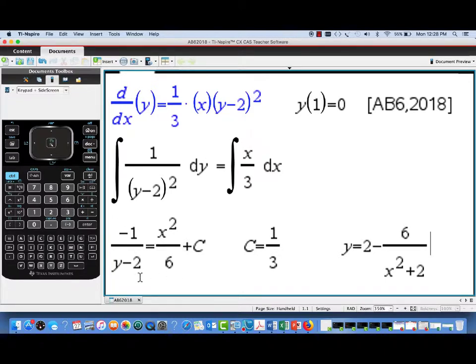So I do want to make a special note here that if you neglect to introduce that arbitrary constant and then you do some algebraic simplification, and then later on you realize that in order to satisfy the initial condition you need some constant, that late introduction of the constant can result in an erroneous solution.